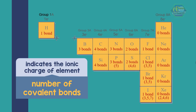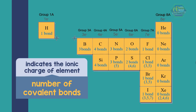The number of covalent bonds also indicates the ionic charge of the element. Group 1A can have one bond; Group 3A can have three bonds; Group 4A can have four bonds; Group 5A can have three bonds for nitrogen and either three or five bonds for phosphorus; Group 6A can have two bonds for oxygen and two, four, or six bonds for sulfur; Group 7A can have one bond for fluorine, one, three, or five bonds for chlorine and bromine, and one, three, five, or seven for iodine. Lastly, for Group 8A most elements are stable and only xenon can have either two, four, or six bonds.